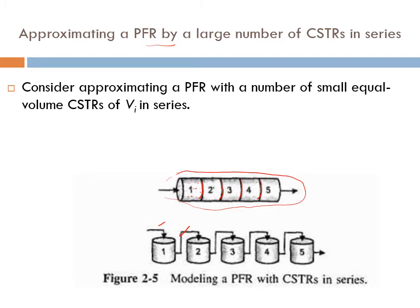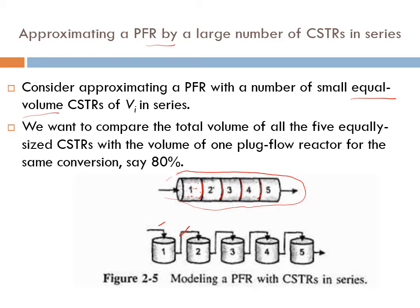Consider approximating a plug flow reactor with a number of small equal-volume CSTRs of volume Vi in series, where i refers to the number of reactors. In this picture it is five. We want to compare the total volume of all five equally sized CSTRs with the volume of one plug flow reactor for the same conversion — let's say 80%. So let's compare the size of this plug flow reactor to the modeled one, which is five equally sized CSTRs in series.